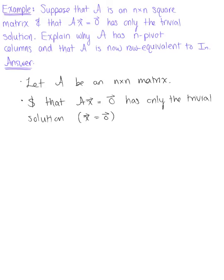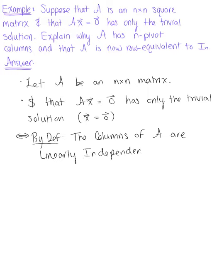If the homogeneous equation has only the trivial solution, we know that by definition the columns of matrix A are linearly independent, which implies that no free variables exist.